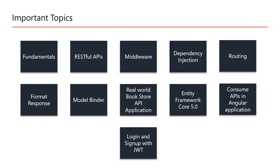Once we understand the key concepts of ASP.NET Core Web API Framework, we will start the development of a real-world Bookstore API application. In this application, we will use ASP.NET Core 5.0, Entity Framework Core 5.0, and SQL Server. We will also consume these APIs in an Angular application, and we will learn about identity code for login and sign-up with JWT.